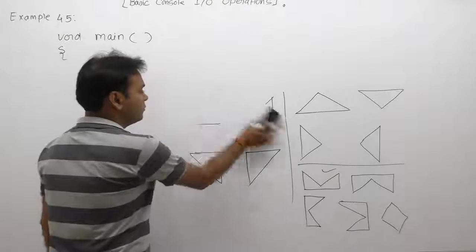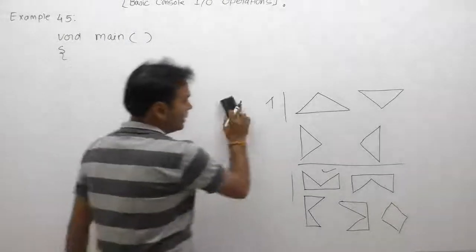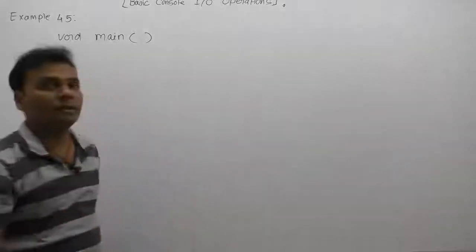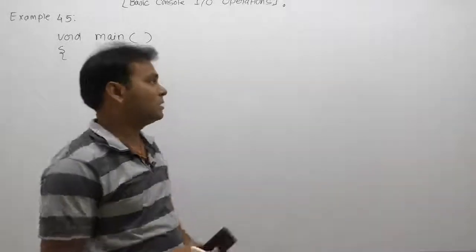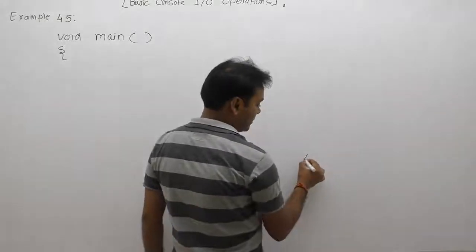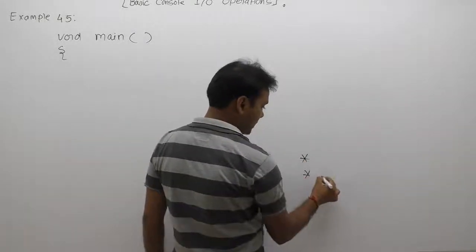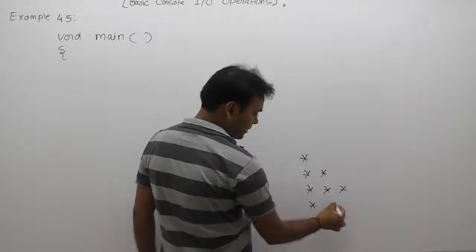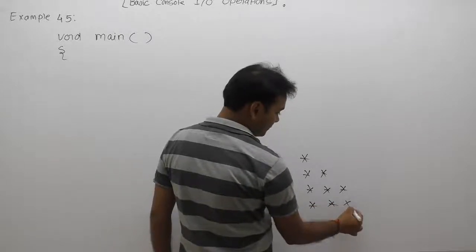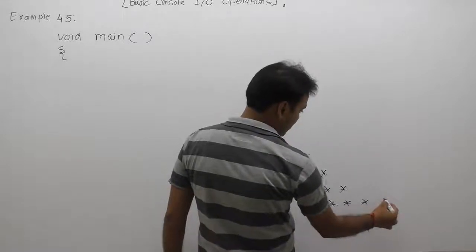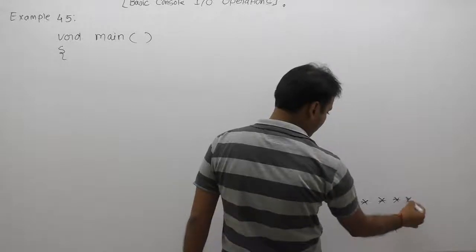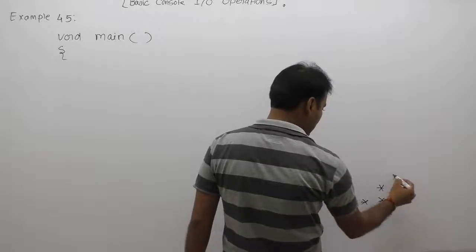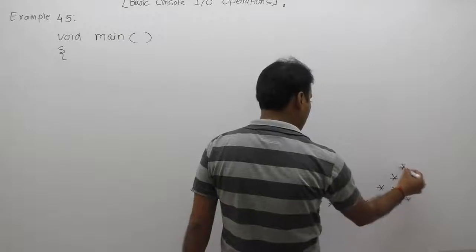First of all we are completing pattern one using single loops, or with the help of single printf statements without using looping statements. We want to display some patterns in a given manner — star, star, star, star, star. The same pattern we completed in the previous video, but now using more than one printf statement without looping statements. We want to manage the same pattern again with the help of a single printf.